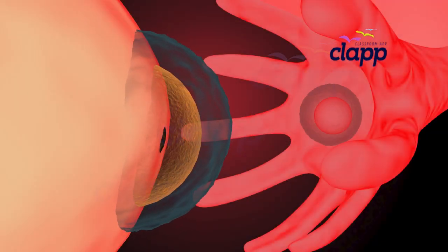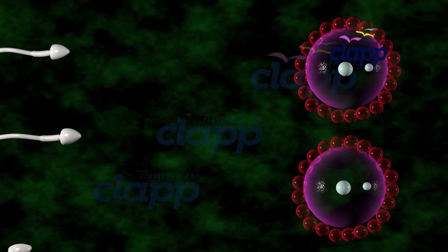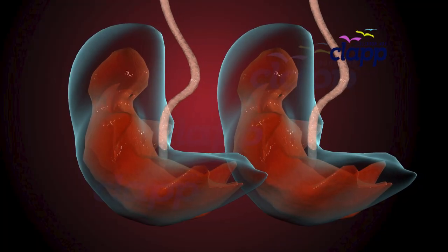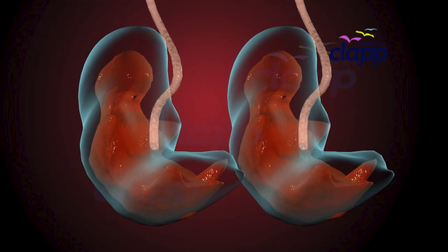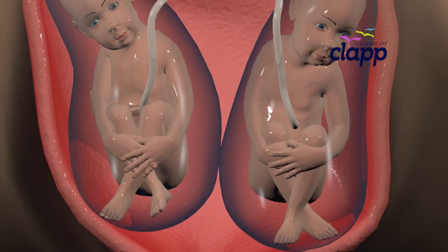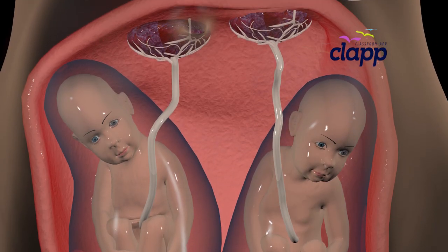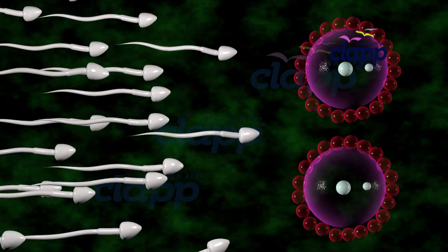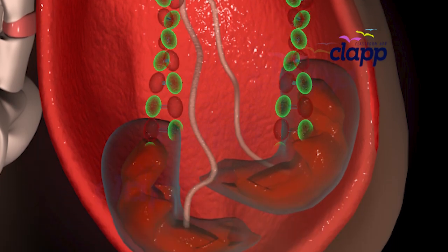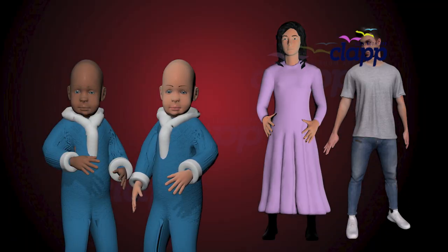Sometimes two separate eggs are released during a single cycle and each egg is fertilized by a different sperm, meaning two unique embryos develop at the same time. Each twin develops independently with its own placenta and amniotic sac. This type is called fraternal twins, also known as dizygotic twins because they come from separate eggs and sperm. Fraternal twins are genetically like ordinary siblings, sharing about 50% of their DNA, so they may look completely different and can be the same sex or different sexes.